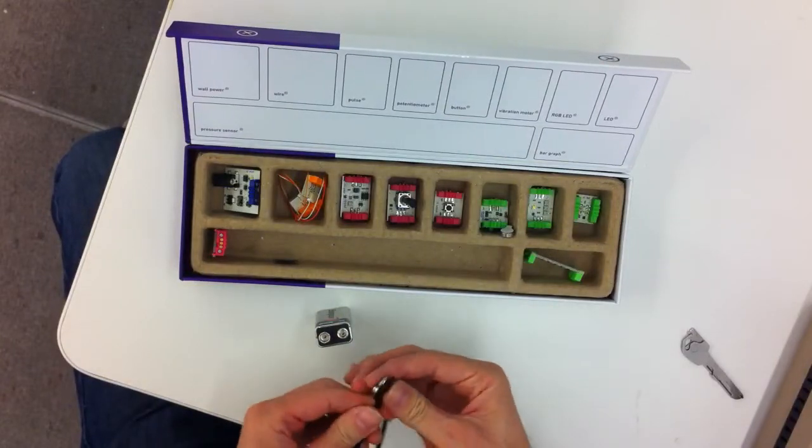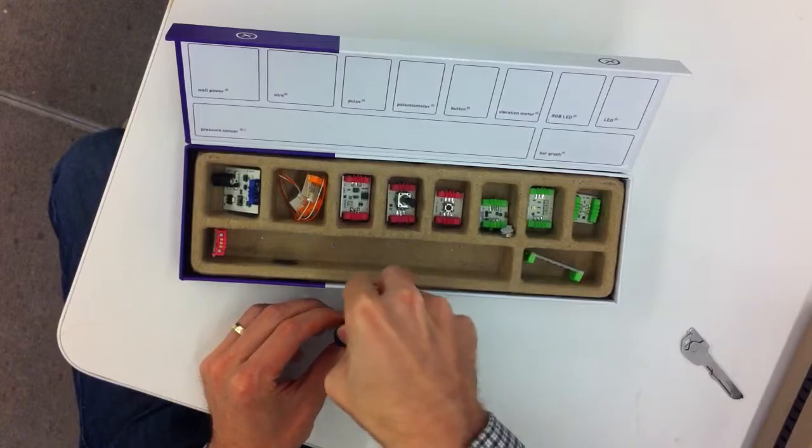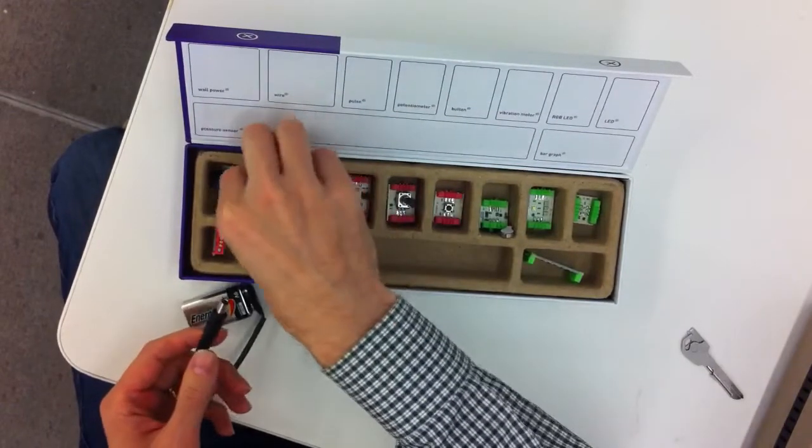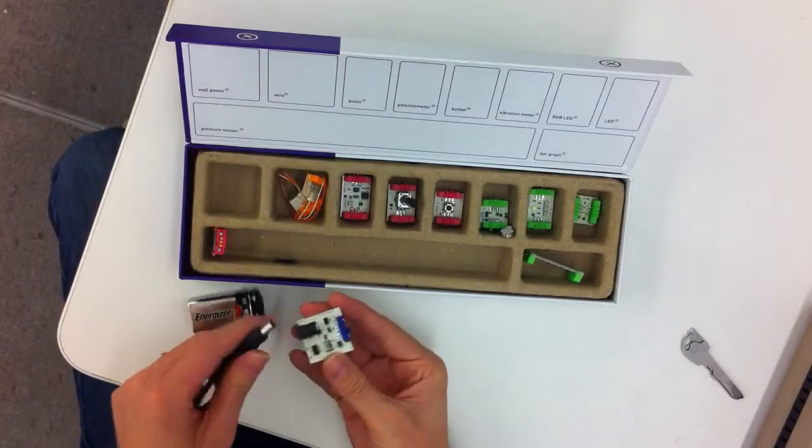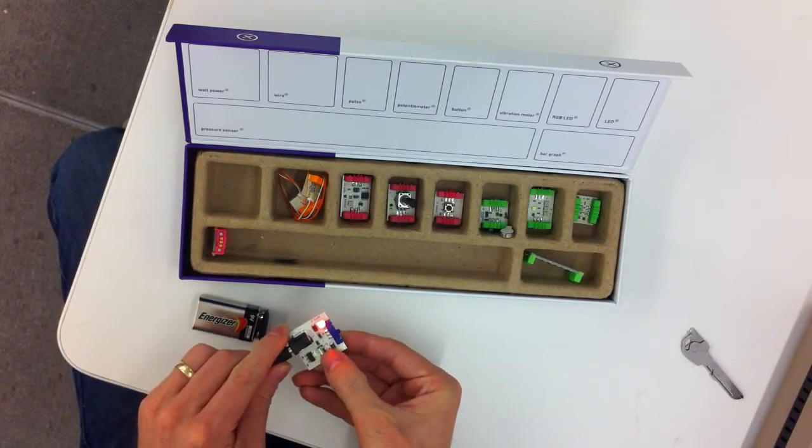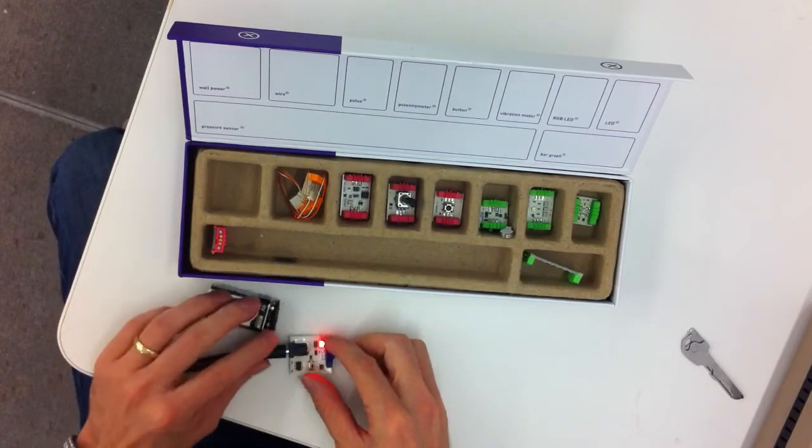First, I'm going to snap together the battery. And for the battery, we connect the wall power. It lights up telling you it's lit. You can turn it on and off. I'll leave it on. It's fun to see things start to work automatically.